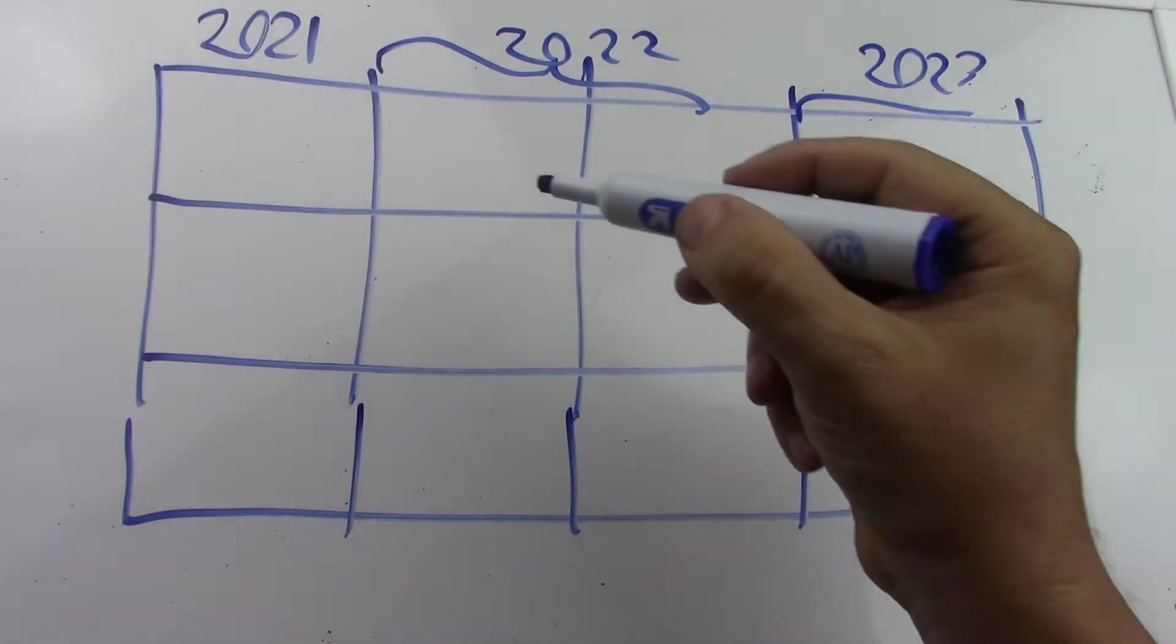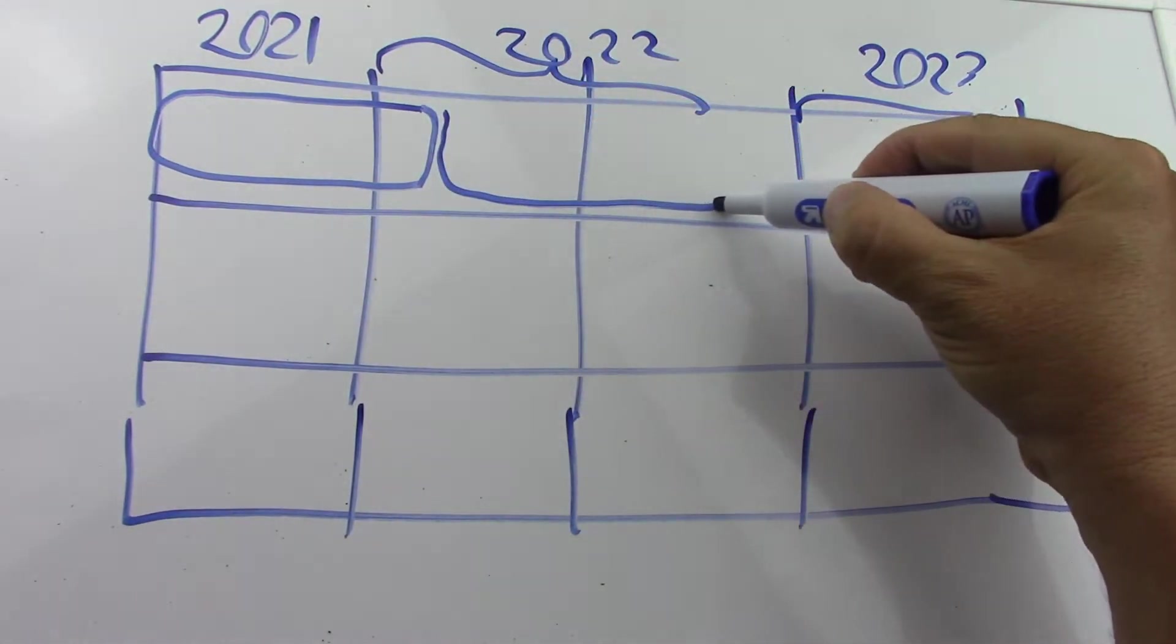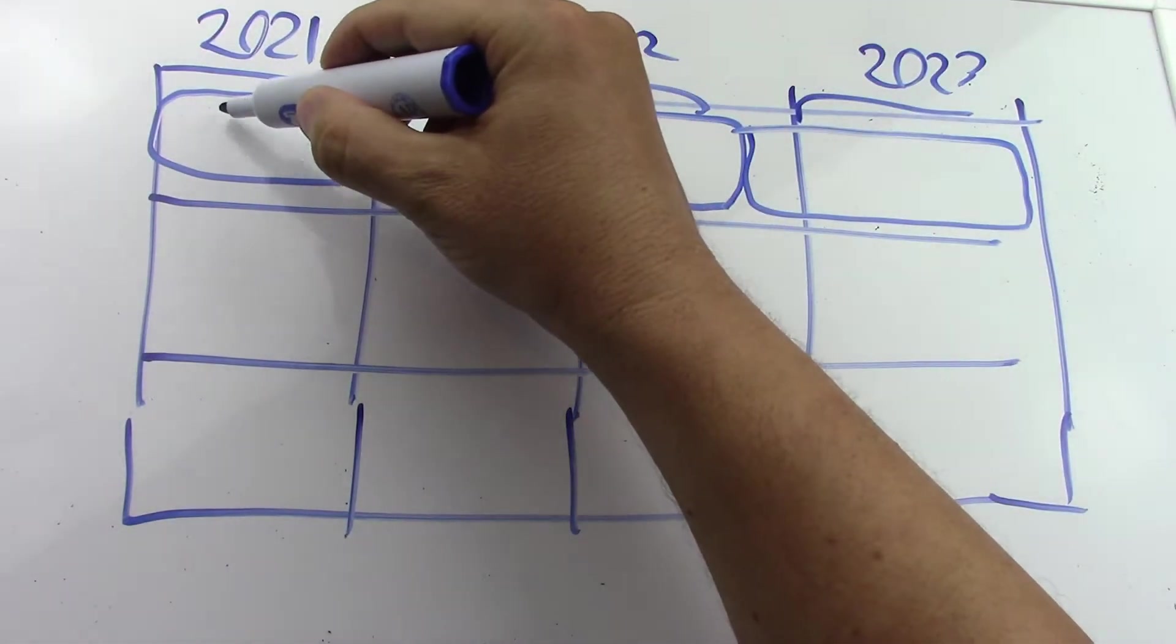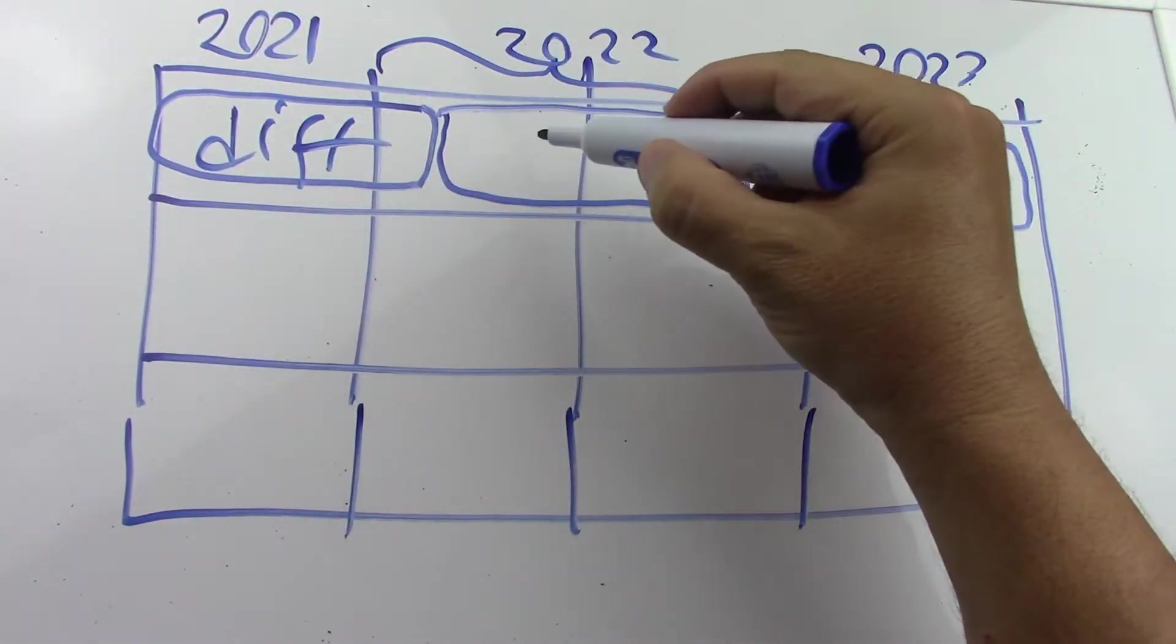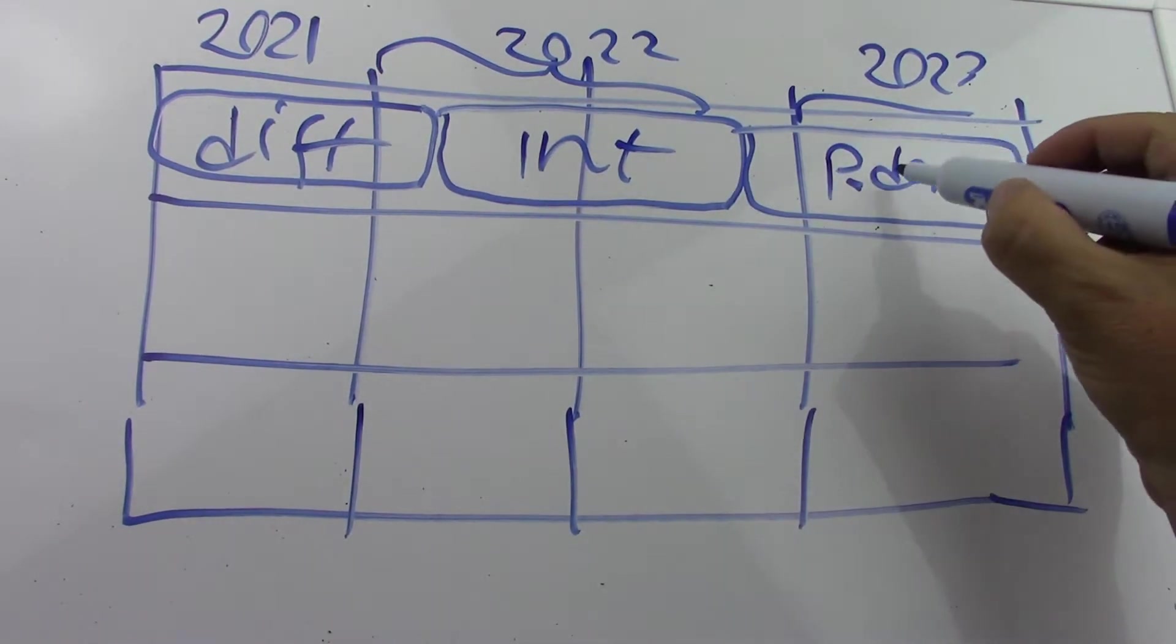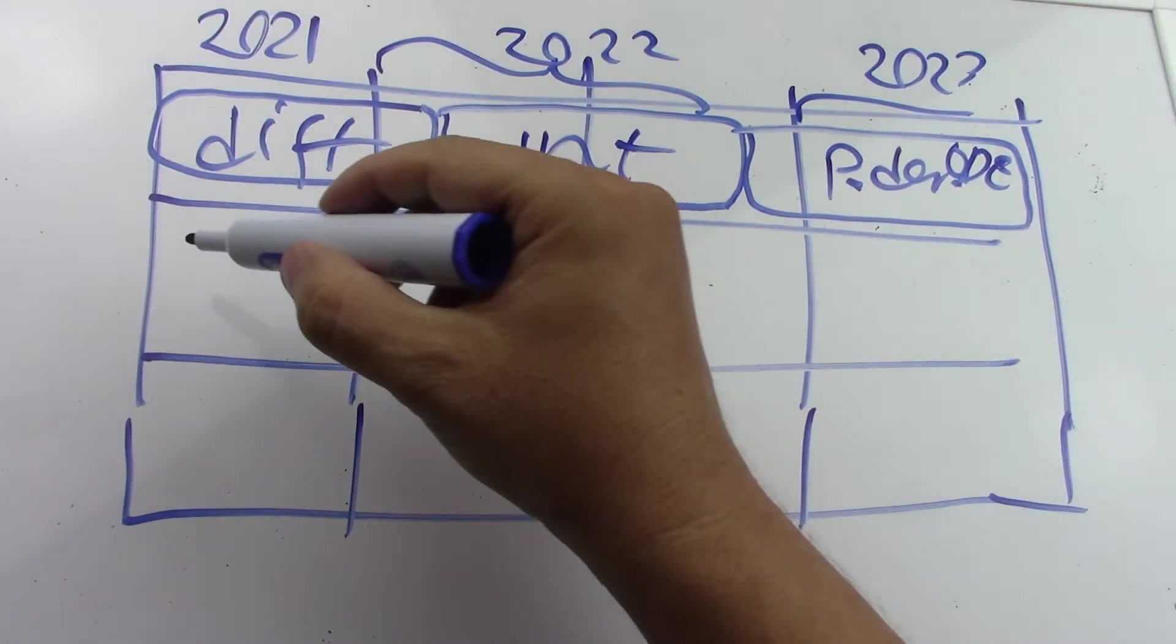I think I can do calculus from the Thomas and Finney book in three courses basically something like this, where this will be differentiation, this will be integration, and this will be partial derivatives and some differential equations, ordinary differential equations.